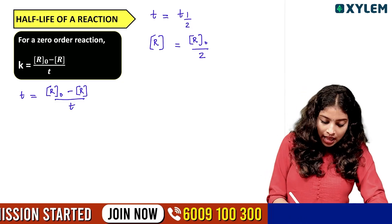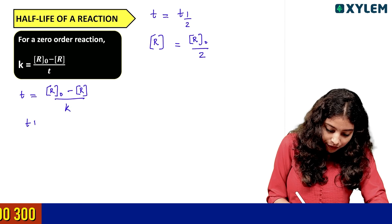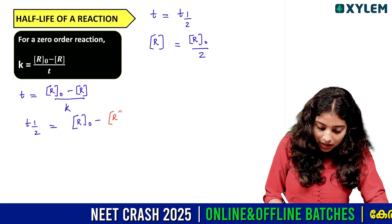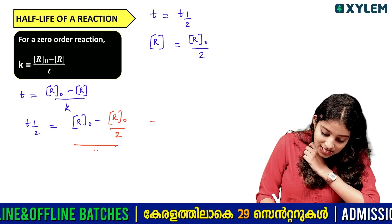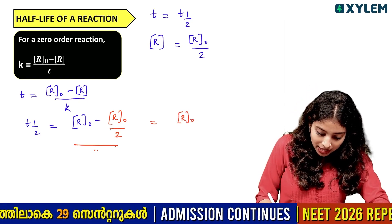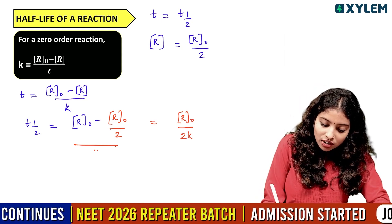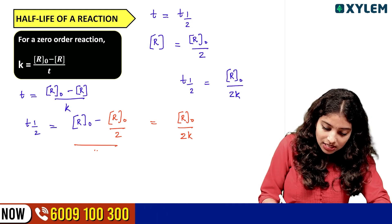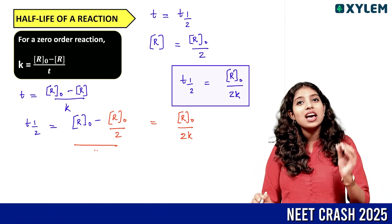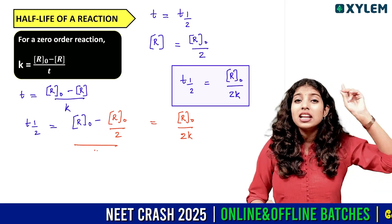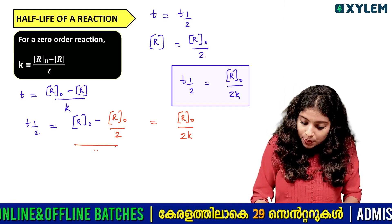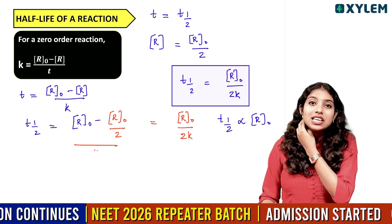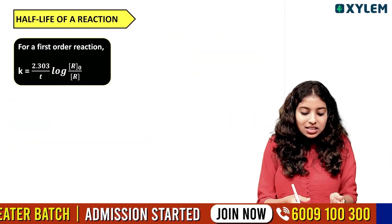When T is equal to T-half, the concentration R becomes R₀ divided by 2. Substituting into the equation, we get T-half is equal to R₀ divided by 2K. So, for a zero-order reaction, T-half is equal to R₀ divided by 2K.